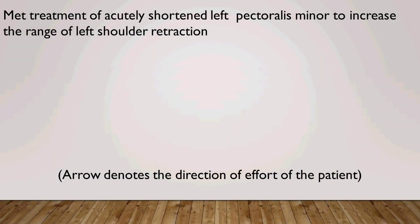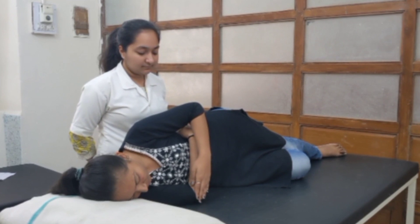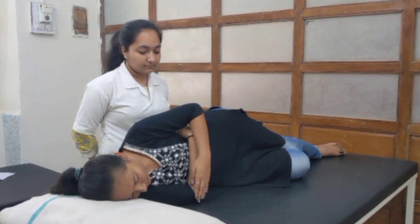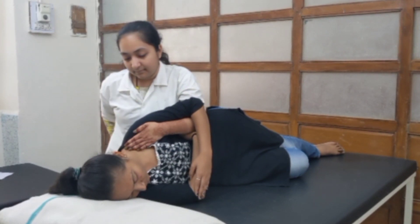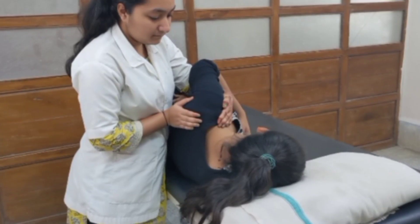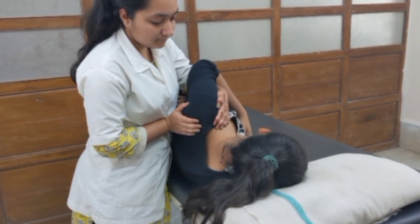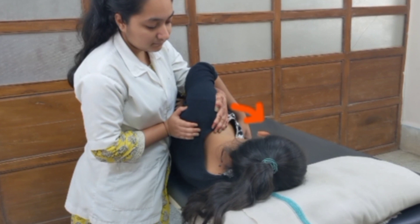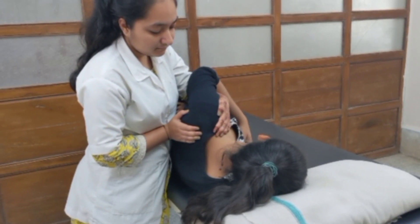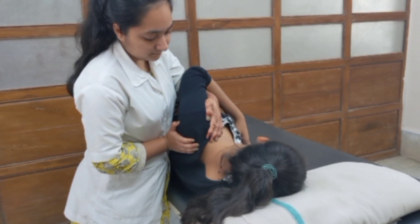MET treatment of acutely shortened left pectoralis minor to increase the range of left shoulder retraction. Patient position: side lying on the unaffected side, arms lightly folded across the lower thorax with the side to be treated uppermost. Therapist position: standing behind the patient close to the edge of the table. Procedure: therapist sets her caudal arm anterior to the patient's elbow so that her caudal hand rests on the pectoralis minor, with the other hand on the scapula. Therapist applies posteriorly directed pressure to the shoulder to induce retraction at the first restriction barrier, coupled with guiding effort from the hand on the scapula. Ask the patient to apply 20% effort anteriorly to the shoulder against the therapist's pressure. Hold for 7–10 seconds. Ask patient to relax. Therapist passively moves the shoulder in retraction at the new restriction barrier. Repeat 2 more times. Dose: 3 repetitions, 1–7 sets.